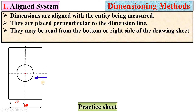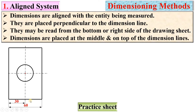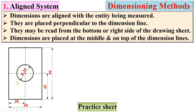If lines are in a vertical position, dimensions are placed at the middle and on top of the dimension line. If I want to give the dimension for a vertical line, the dimension must be perpendicular to the dimension line and can be read from the right side of the drawing sheet. For a circle, the dimension can be given as phi (diameter), for example 30 mm, or as radius — for example R 50, where R means radius.